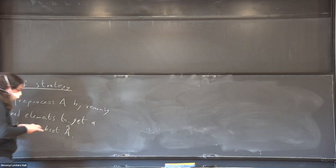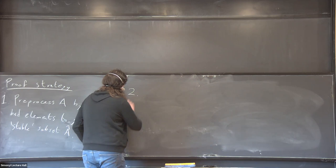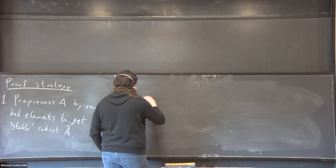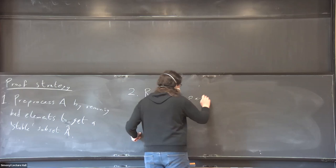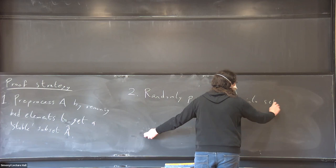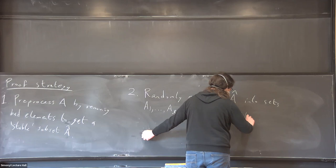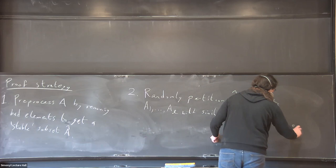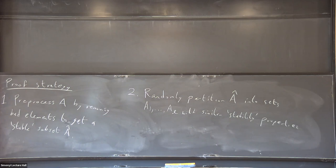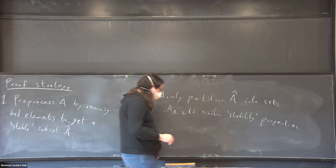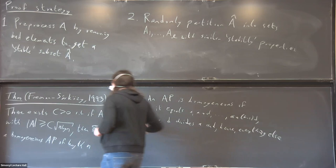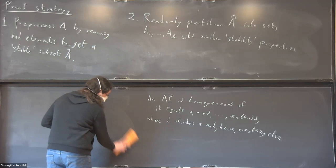The second thing, which is much simpler and very familiar to people in extremal and probabilistic combinatorics, is that you now randomly partition the set. A key thing is that when we take random subsets, the random subsets are also stable in the same senses.